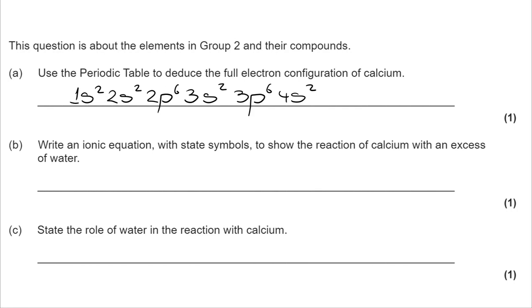Part B: write an equation with state symbols to show the reaction of calcium with an excess of water. I'm going to start by writing the full equation out, and I've included state symbols. Calcium plus water goes to calcium hydroxide plus hydrogen. What I then need to do is look at what can be broken up into its ions. Calcium is a metal, it can't. Hydrogen and water are both covalent. They don't get broken down to their ions, but our aqueous calcium hydroxide does.